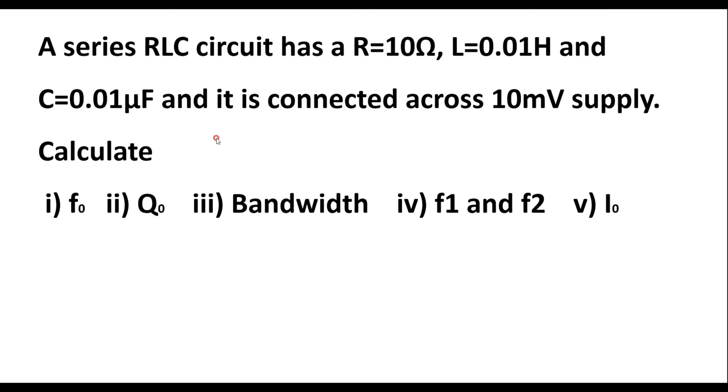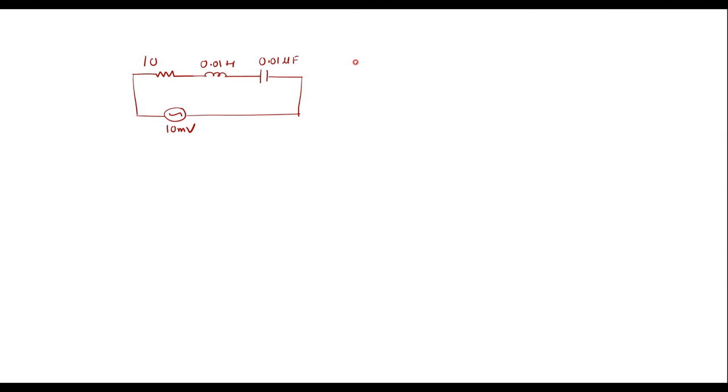Let me calculate f₀ first. We know that f₀ is the resonant frequency, which can be calculated using the formula 1 over 2π√(LC). By substituting, we get 1 over 2π√(0.01 × 0.01 × 10⁻⁶).